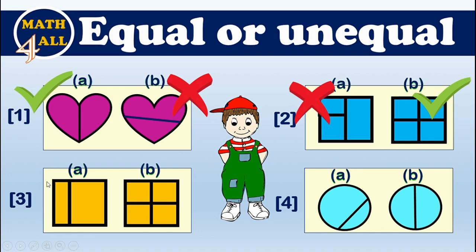Now example three: we have two shapes. The first shape is broken into two unequal parts, so it's not a fraction. The second shape B is broken into four equal parts — this part is equal to this part — so it's a fraction.